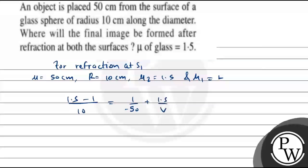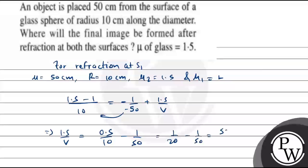So 1.5 over v equals (1.5 minus 1) over 10 minus 1 over 50, which gives 0.5 over 10 minus 1 over 50. This equals 1 over 20 minus 1 over 50, which is (50 minus 20) over 1000, giving 30 over 1000. Therefore 1.5 over v equals 30 over 100, which implies v equals 5 cm.